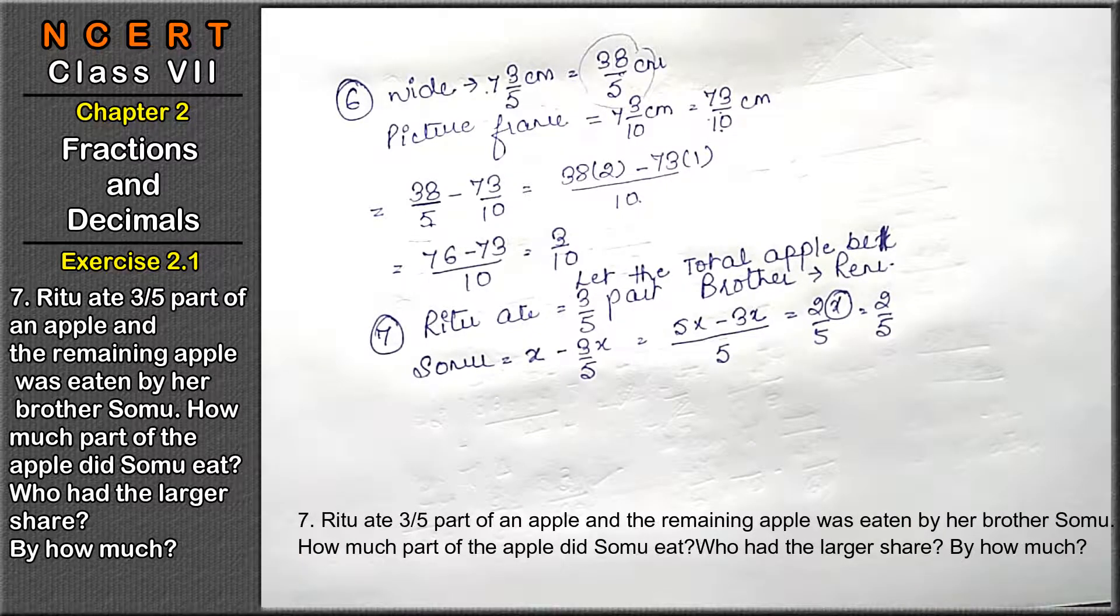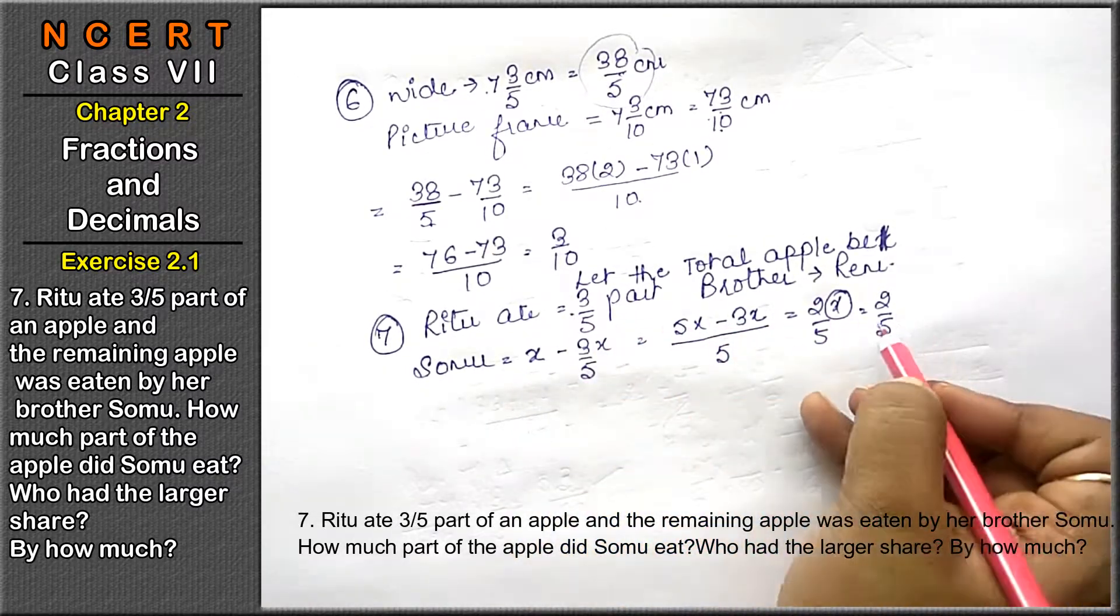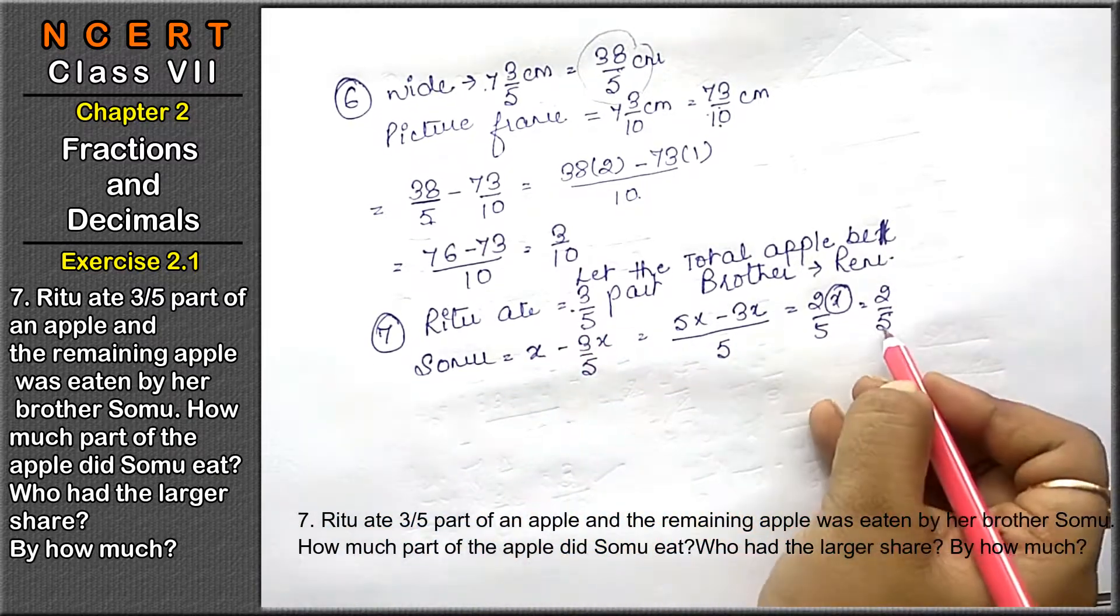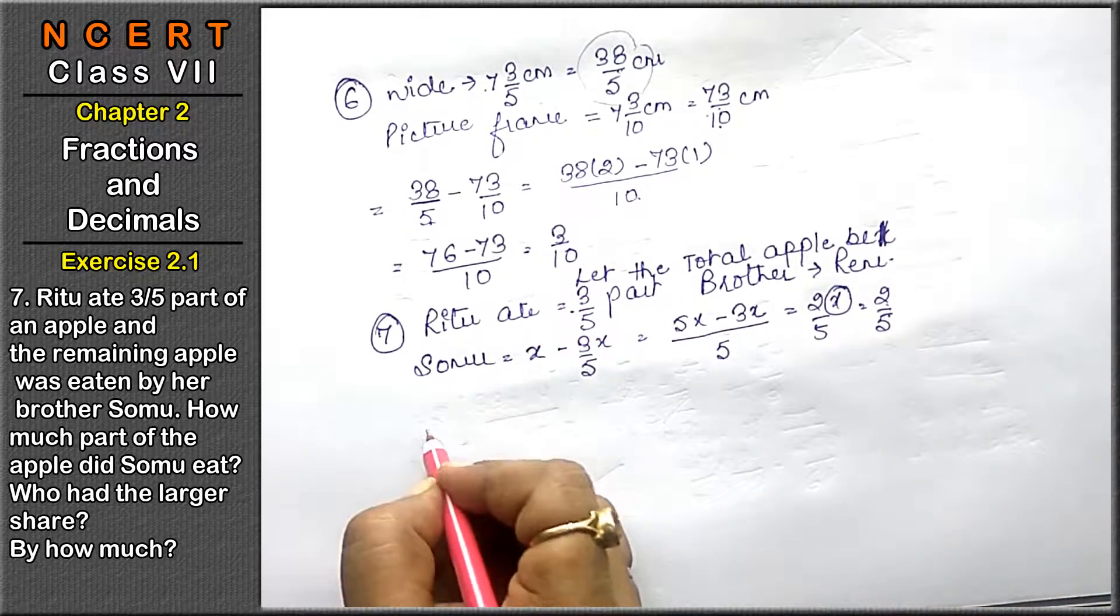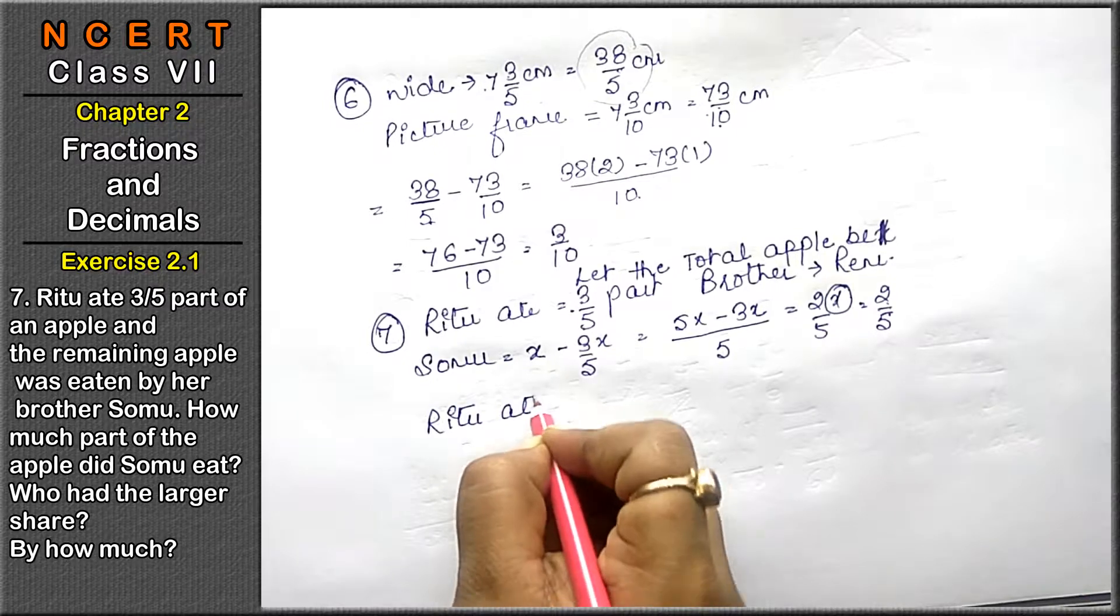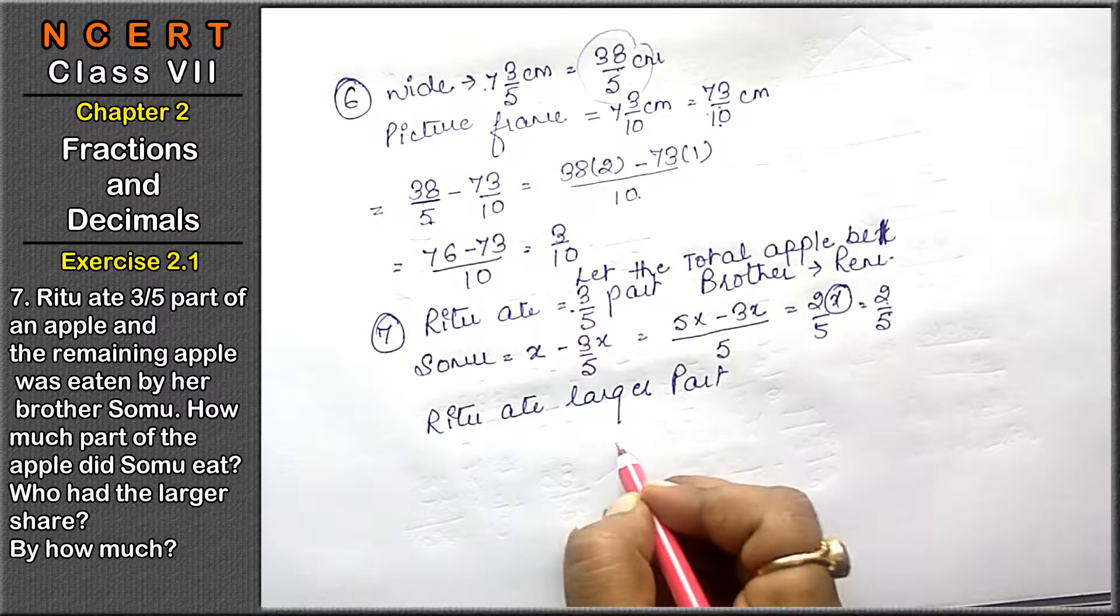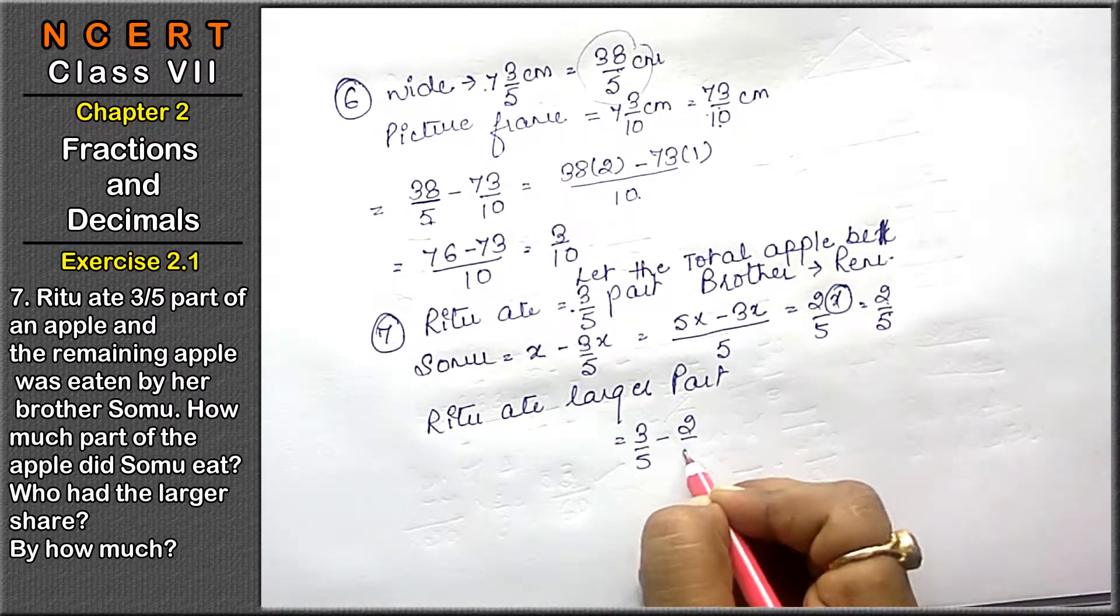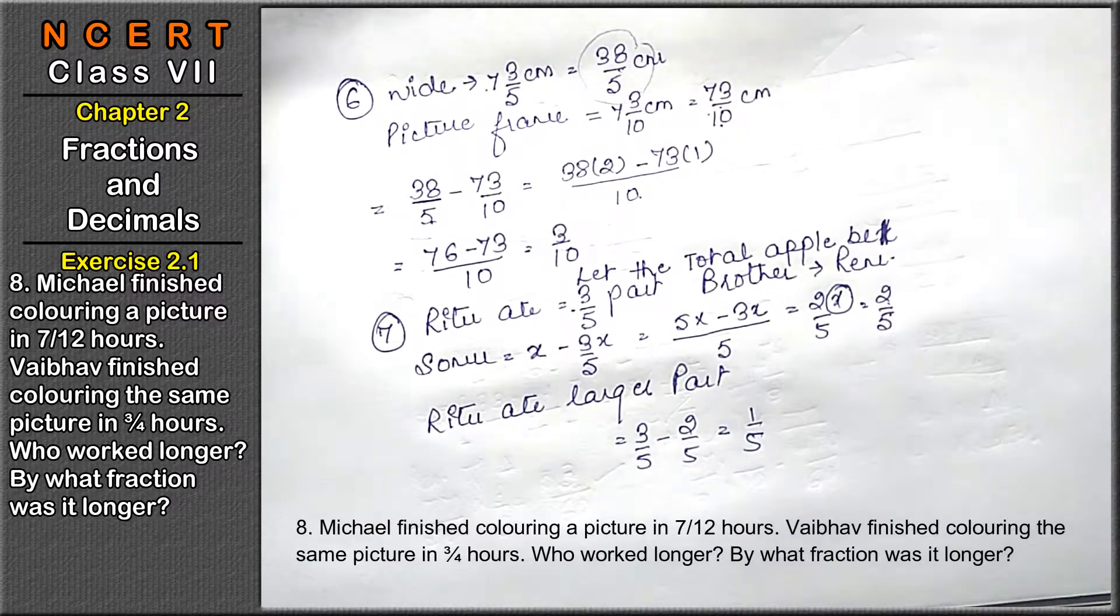Who had the largest share and by how much? Ritu ate 3/5, brother ate 2/5. The denominator is the same, so whose numerator is larger? Ritu's is larger, so Ritu ate the larger part. But by how much? Let's deduct it: 3/5 minus 2/5, that is by 1/5 part. Let's do the last part.